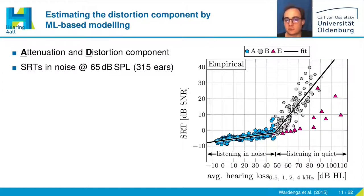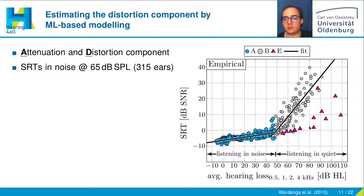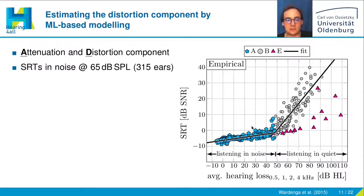People of Group B performed worse; their SRTs were defined by their absolute hearing threshold, so they performed the task rather in quiet. Group E was in between: for low frequencies they could definitely hear the noise, but at high frequencies they could not hear the noise, so they are outside the scope of these two patterns.